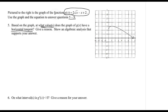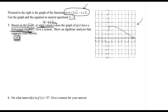Since the question asks where, we're looking for an x value. And it asks us to find this based on the graph — so we look at the graph to estimate where we'll have a horizontal tangent. Graphically, where would I see a horizontal tangent? On what two types of graphical features?